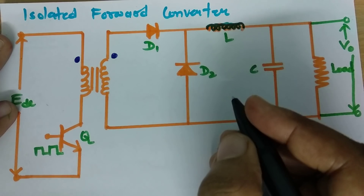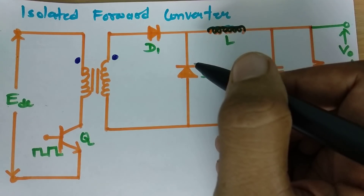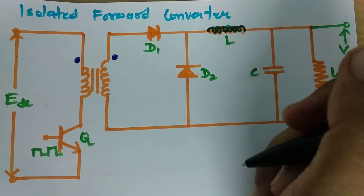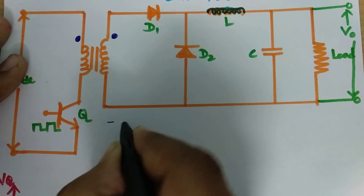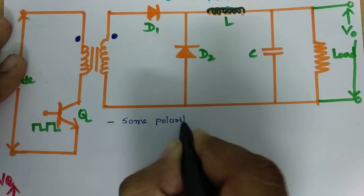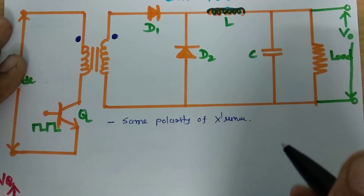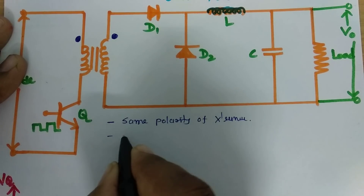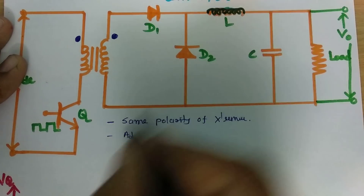The second difference is that it is compulsory to use an additional L filter in the isolated forward converter. So to summarize, the two basic differences are: first, same polarity of the transformer winding; and second, an additional L filter is required.